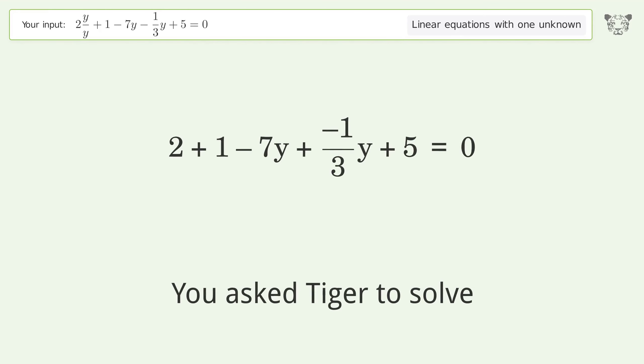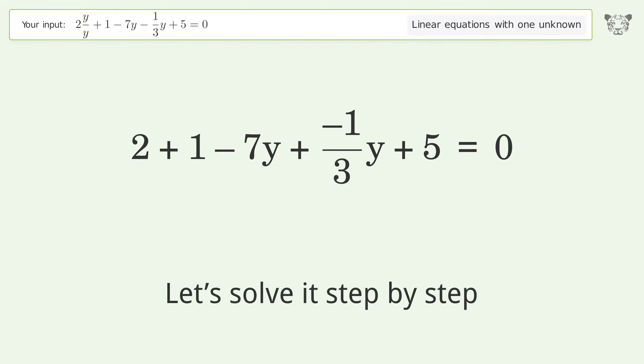You asked Tiger to solve. This deals with linear equations with one unknown. The final result is y equals 12 over 11. Let's solve it step by step.